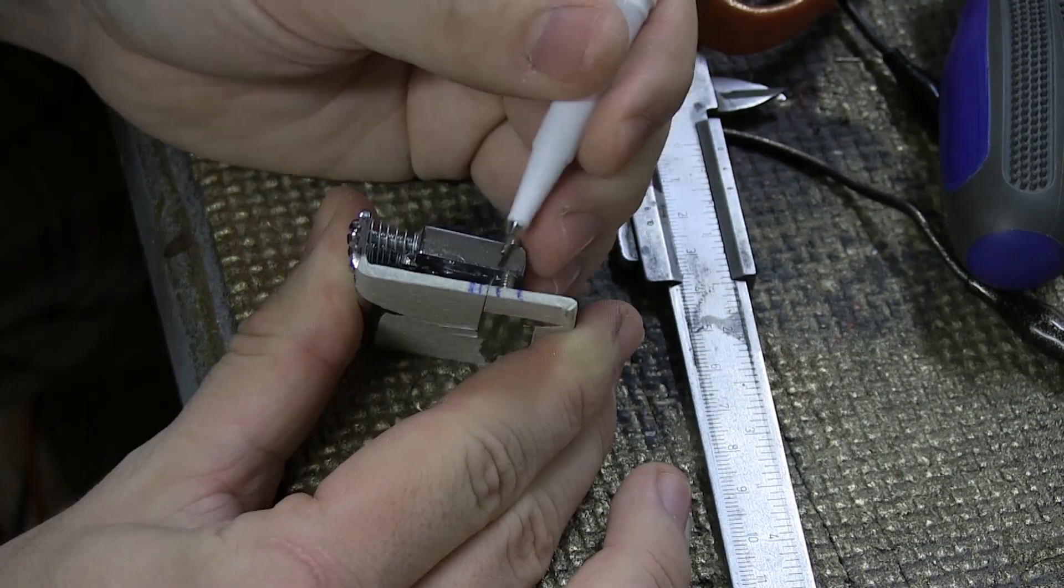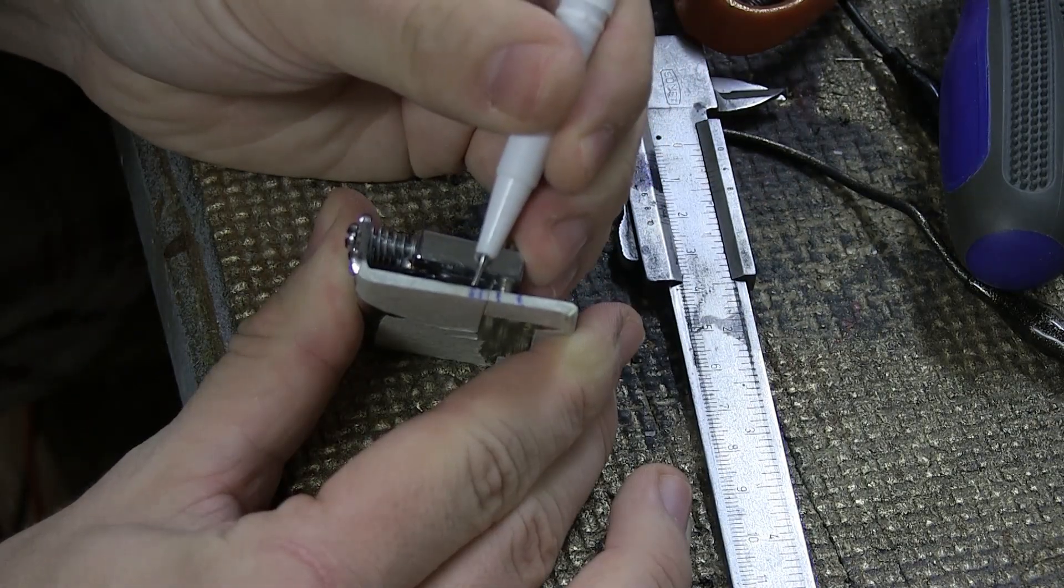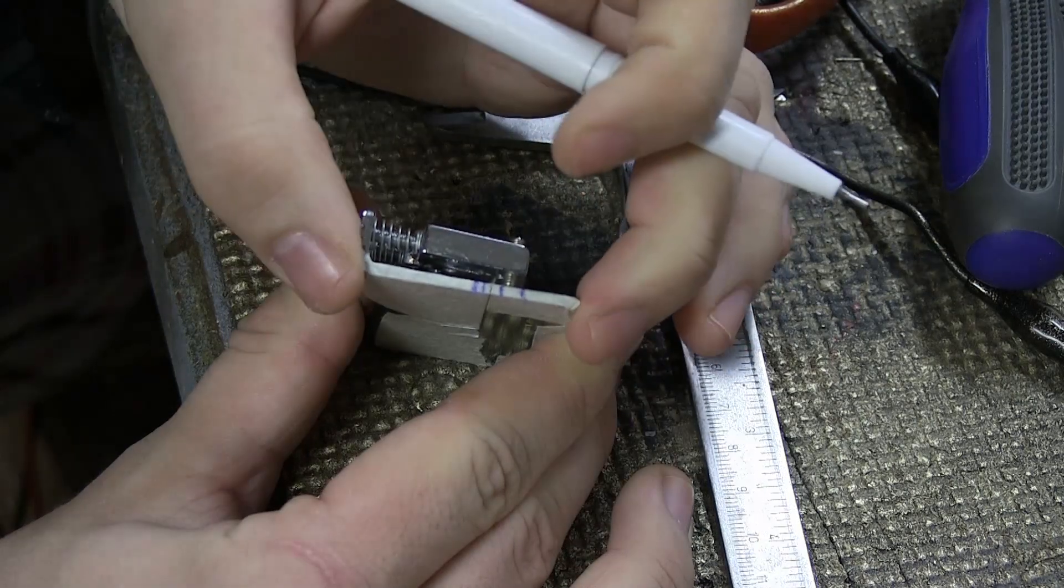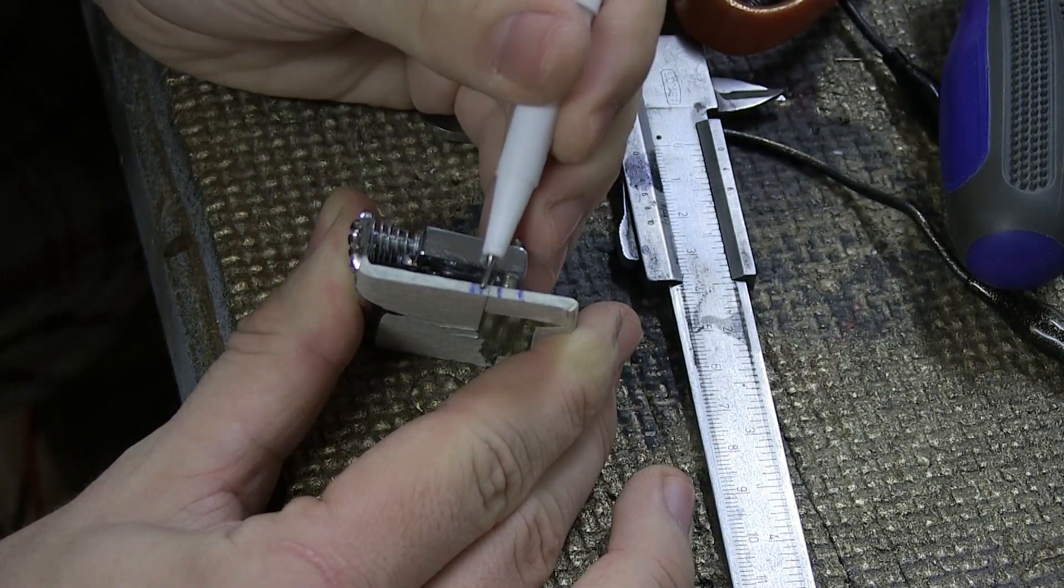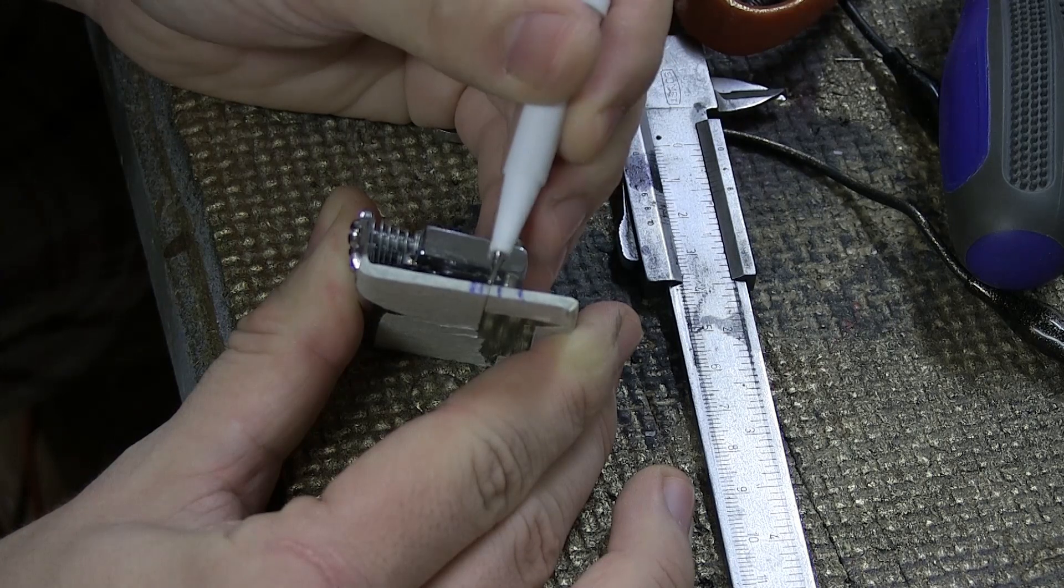You can see here now I have four lines. This line is where the middle of the bridge is if you just measure from the outside. And that line and that line is the range the saddle has.